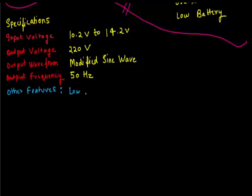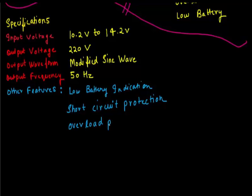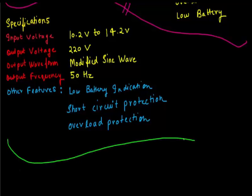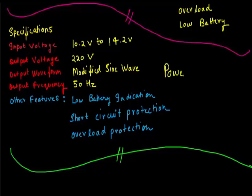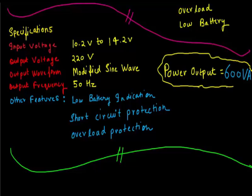Other features that will be included in this circuit are low battery indication, short circuit protection circuit and overload protection circuit. These are basically the housekeeping tasks. These are not the main tasks that will be performed by the inverter circuit but are the housekeeping tasks. One more thing I forgot is the power output which is very important, that is 600 VA in our case.